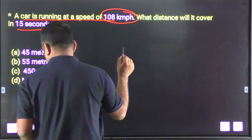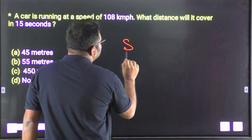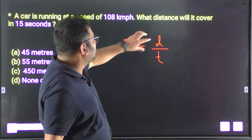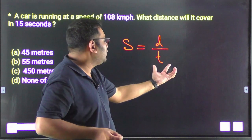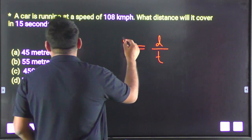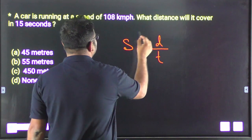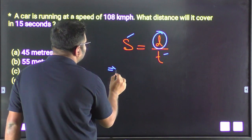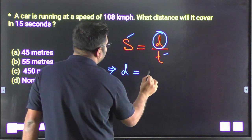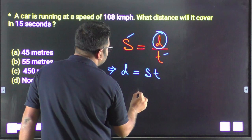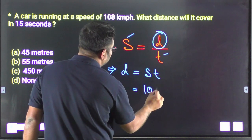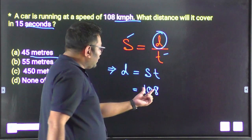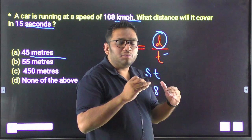Using the formula: speed equals distance divided by time. To convert km per hour to meters per second, we multiply by 5 divided by 18. So 18 km per hour equals 1 meter per second, and 108 km per hour gives us a speed in meters per second.